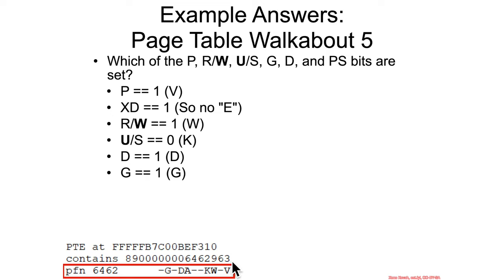Well, what did it look like for me? The present bit was set. The read-write bit was set, so it was writable. The user supervisor was zero, so it was kernel. XD bit was set, so it was non-executable, dirty, and global.